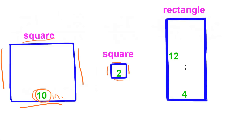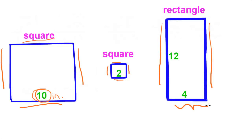With a rectangle, not all four sides are exactly the same — only two sides are exactly the same as one another. So these two sides are 12 and these two sides are four units long.